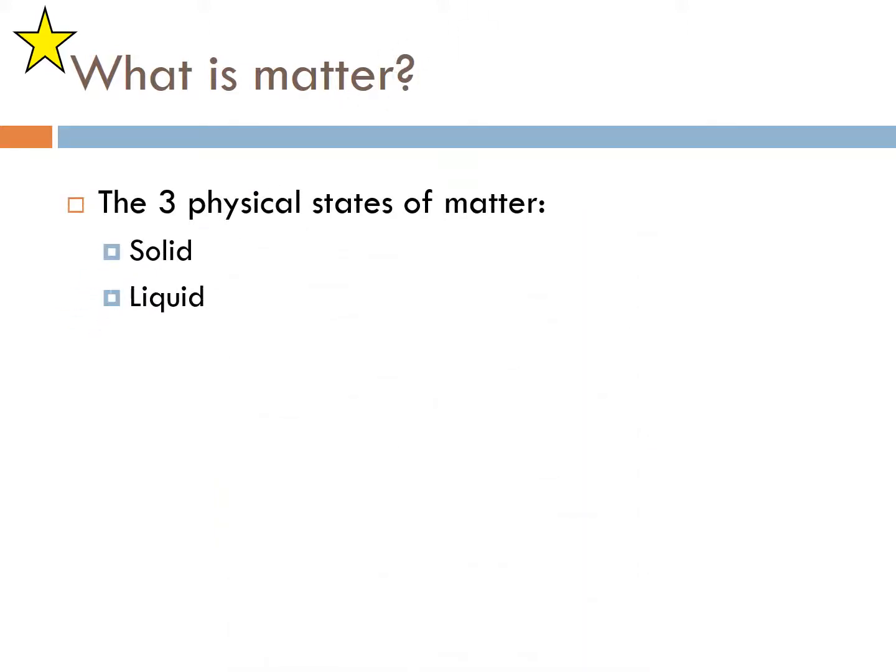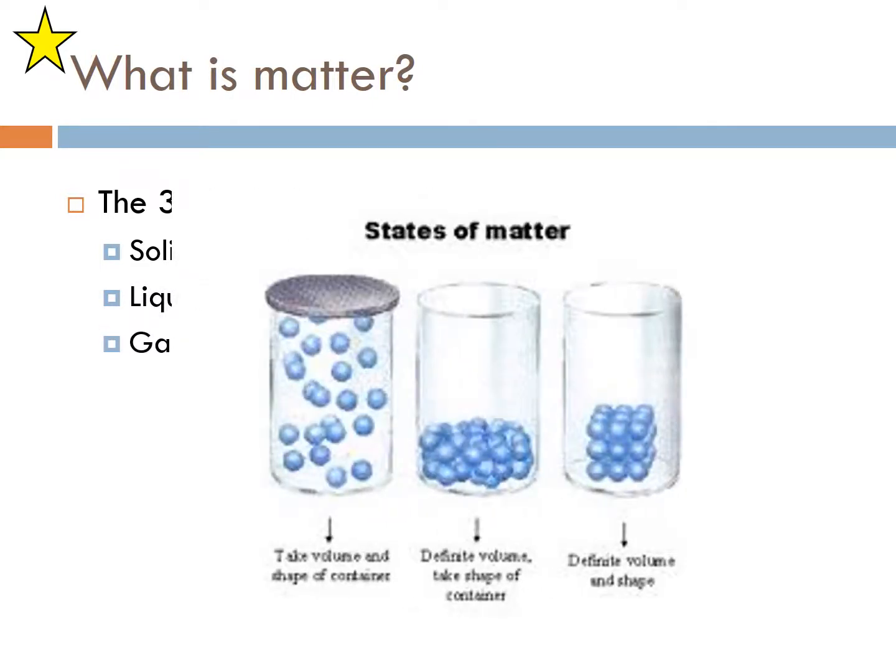There are three physical states of matter: solid, liquid, and gas. A gas takes the volume and shape of the container. Liquids have a definite volume and take the shape of the container, so if you have liquid water it would be different shapes based on the container. A solid is definite volume and definite shape, so no matter what you have, it's not always going to spread out in that container.